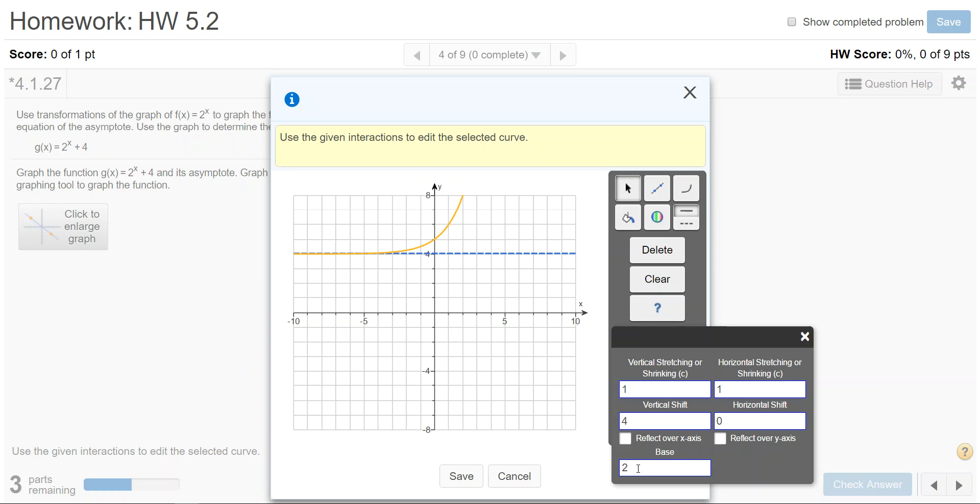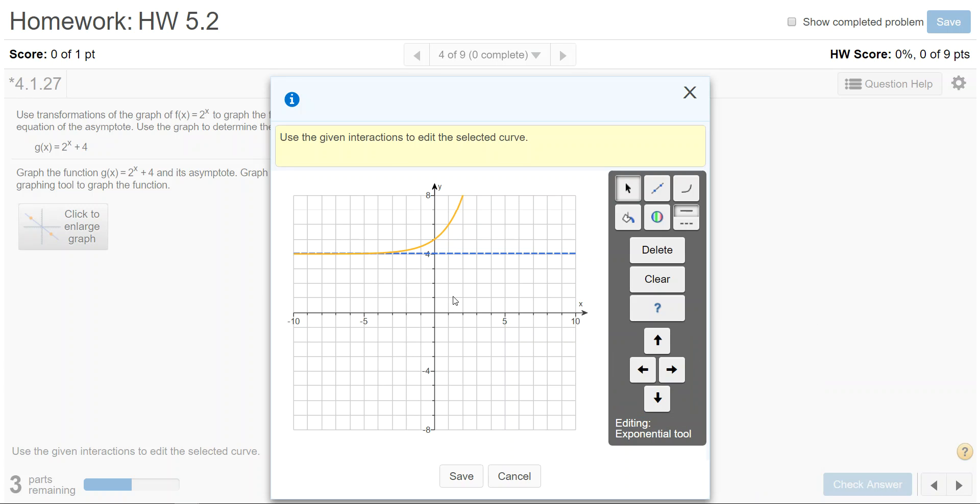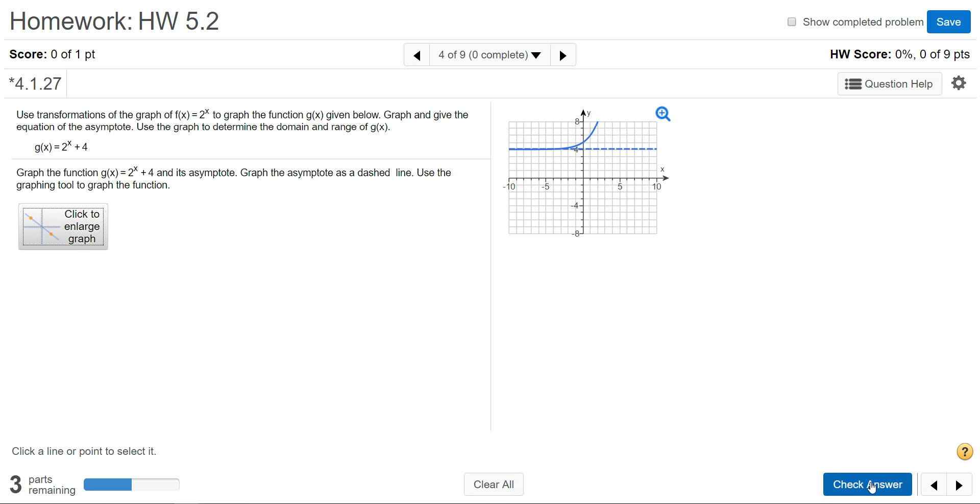Check the base. I'm clicking in the base box. It is a 2 which matches the graph of the function. So X out of that. Make sure that your graph did shift correctly and then save and then click check answer.